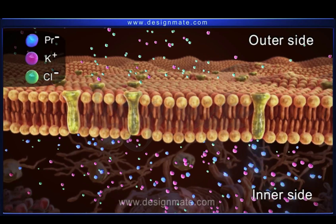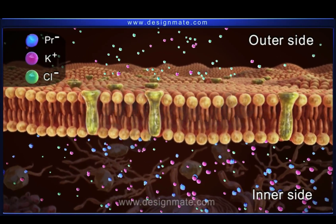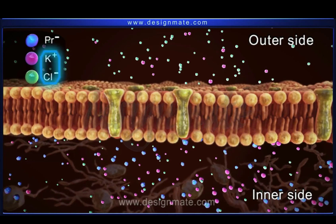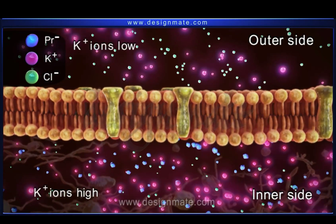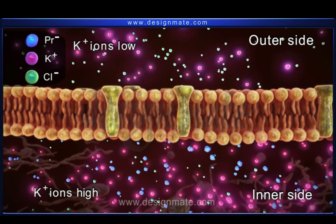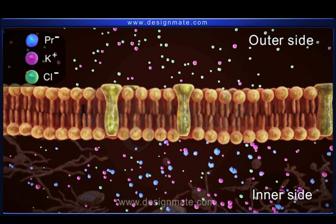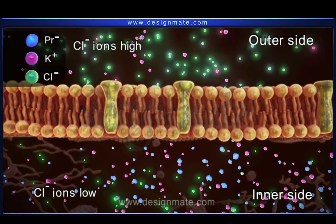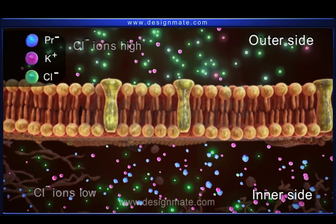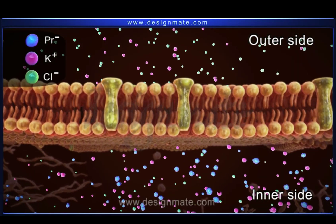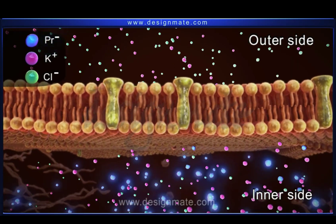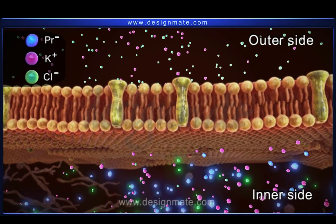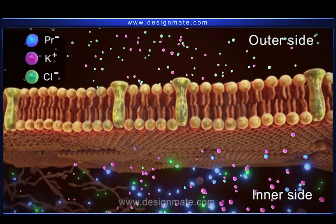On the outer side of the membrane, it is observed that it has K+ and Cl- ions. The concentration of K+ ions here is less as compared to the inner side. The concentration of Cl- ions is more on the outer side as compared to the inner side. The presence of both negatively charged PR- and Cl- ions on the inner side makes the side negative relative to the outside of the cell.